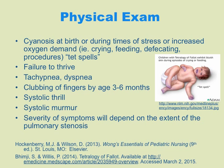The baby is also going to be really small. You often see tachypnea or dyspnea, clubbing of the fingers usually by age three to six months due to chronic hypoxia, and then polycythemia. They'll usually have a systolic thrill and a systolic murmur. The severity of these symptoms depends on the extent of the pulmonary stenosis — if it's not that bad, symptoms may be mild and more difficult to catch.